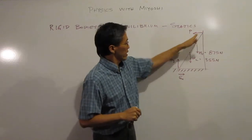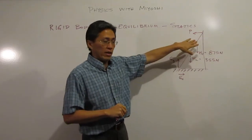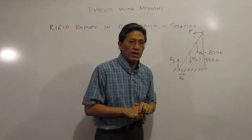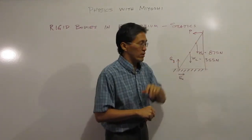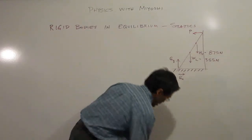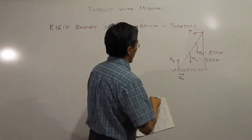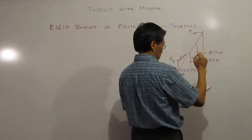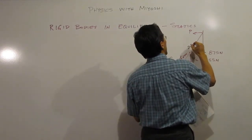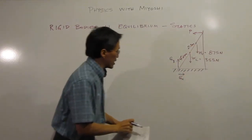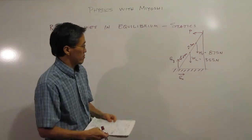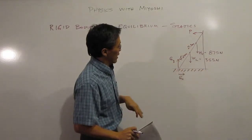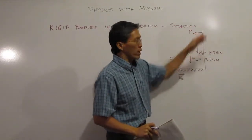We have a ladder with a firefighter on it, and the weight of the ladder is not negligible. The ladder weighs 355 newtons and the firefighter weighs 875 newtons. This is an 8-meter ladder, with 4.0 meters marked along it and 2.3 meters from the center. The ground has friction, and the wall has no friction.